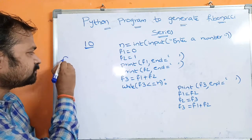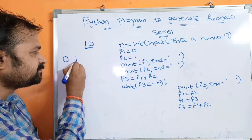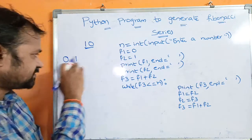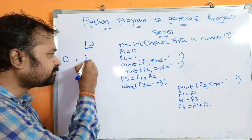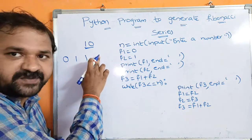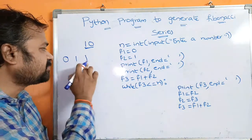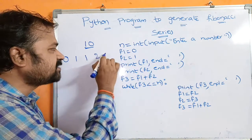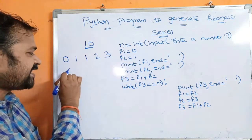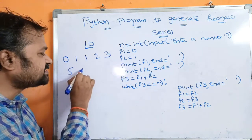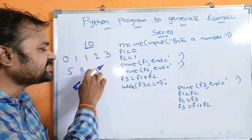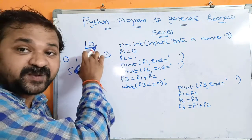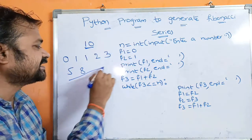Here the first number is 0, the second number is 1. We will get the next Fibonacci number by adding its previous 2 digits. So 0 plus 1 means 1. Next, 1 plus 1 means 2. Then 2 plus 1 means 3, 3 plus 2 means 5, 5 plus 3 means 8, 8 plus 5 means 13. But 13 is greater than 10, so we display up to 10 only. So we will get this series as the output.